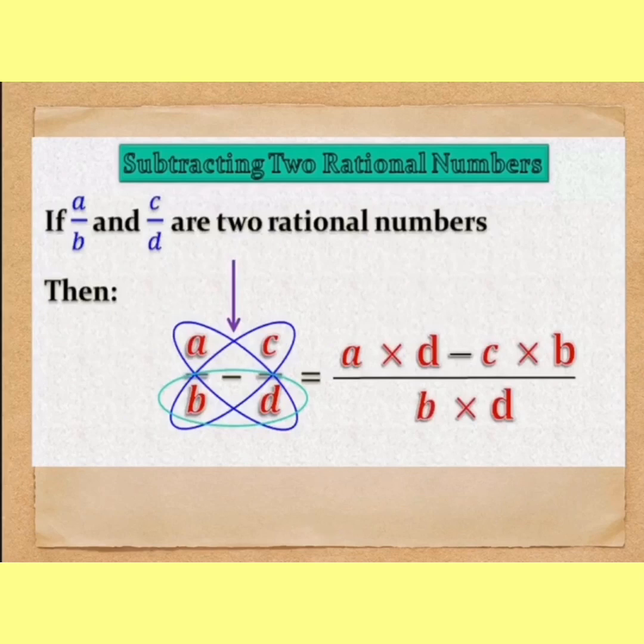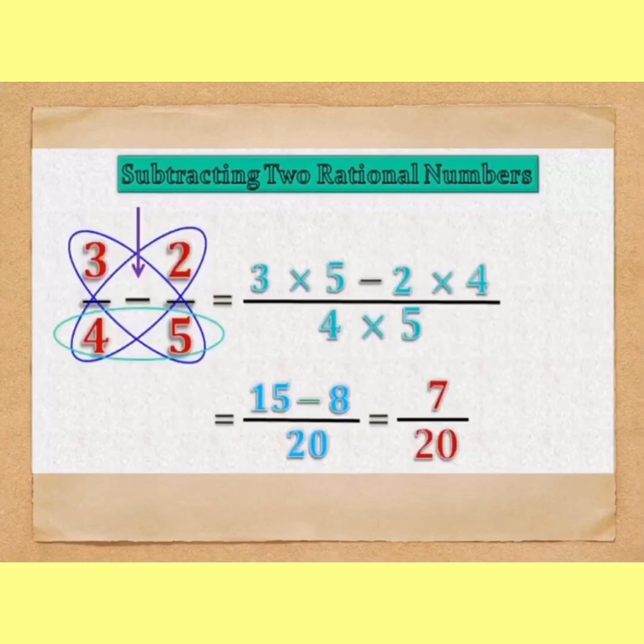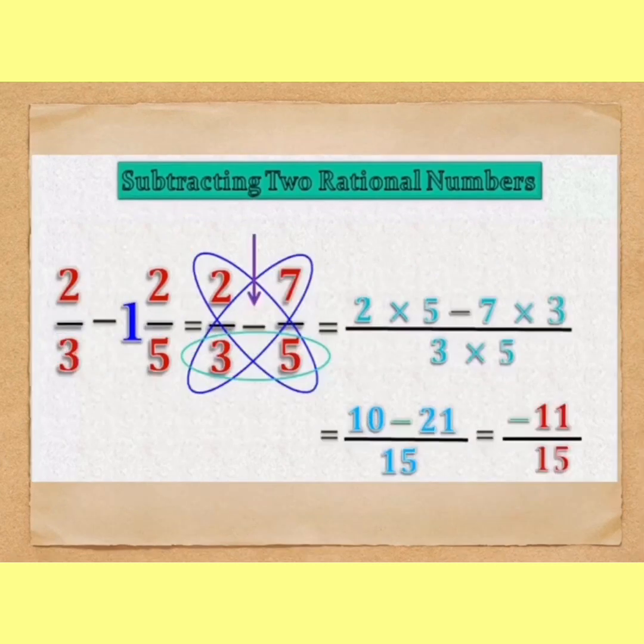If we want to take example like 3/4 minus 2/5, then multiply the denominators. 4 fives are 20. Multiply 3 by 5, 15. Multiply 2 by 4, 8. And you will get 7 upon 20.